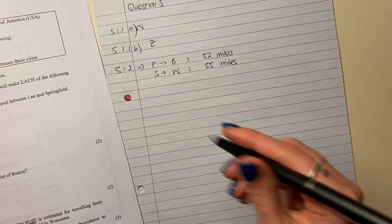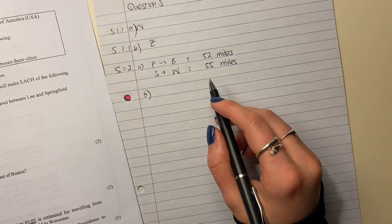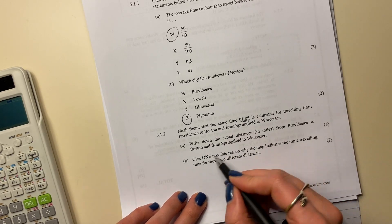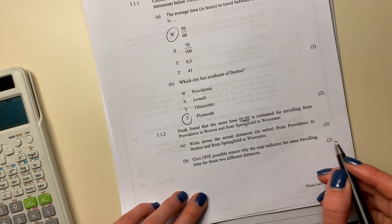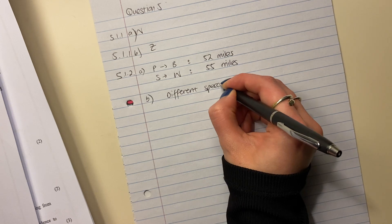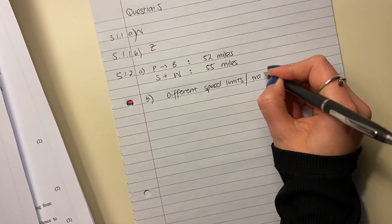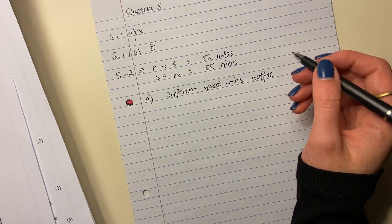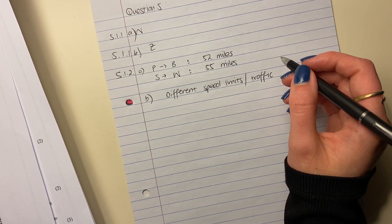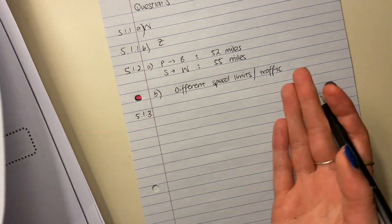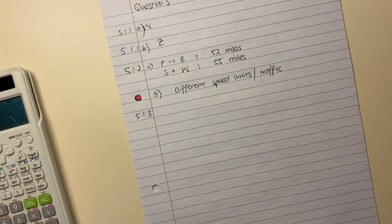Then it says: give one possible reason why the map indicates the same traveling time for these two different distances. It could be different speed limits, volumes of traffic, number of traffic lights, or conditions of the roads — for example, if there are potholes you have to drive more slowly. You could give any logical reason there. It only says one, so don't write 15 — you won't get more marks.